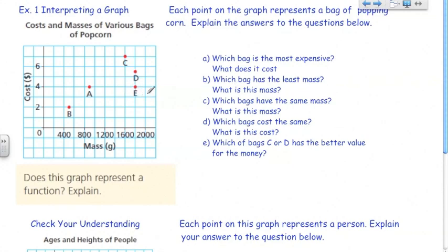Here's our second example. This graph relates costs and masses of various bags of popcorn. This is really random. I don't know why they chose this, but we're going to roll with it. Here they're telling us each point on the graph represents a bag of popping corn. Explain the answers to the questions below.